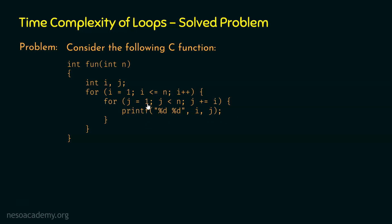In the inner for loop, variable j is initialized to 1, j is compared with n, and j is incremented by i — that is, j is updated to j plus i. Here we can observe that in the update statement, variable i is used, which is the outer loop variable. This means variable j depends on variable i, and hence this inner for loop depends on the outer for loop. This is a dependent nested loop structure, and finding its time complexity is not straightforward.